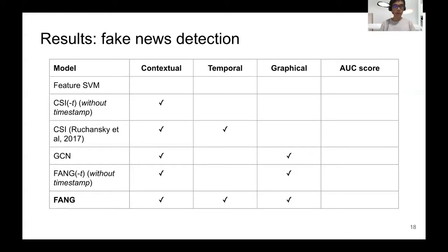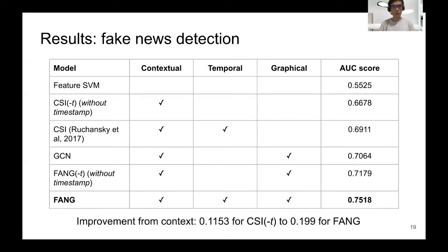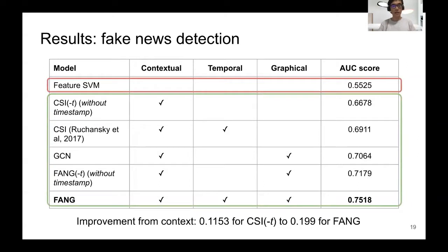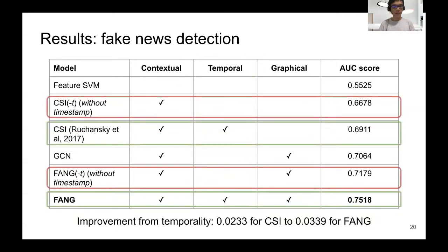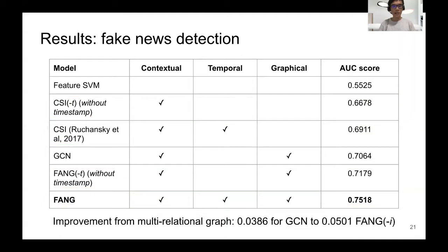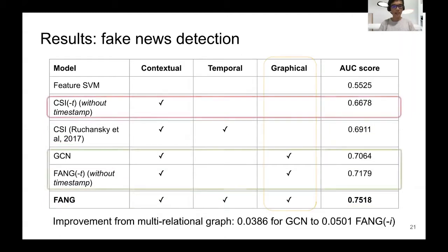To verify the importance of contextual information, we compare our model against feature-based SVM. For temporal importance, we compare our models against their time-ablated baselines, which are FANG-T and CSI-T. And for graphical importance, we compare GCN and FANG against CSI. The metric we're using to measure fake news detection performance is the area under the curve or AUC score. First of all, we can see that all five models outperform feature SVM, indicating the importance of contextual information. Then we can see that both FANG and CSI outperform their time-ablated baselines, indicating the importance of temporal information. And lastly, we can see that both FANG and GCN outperform CSI, indicating the importance of graphical information.